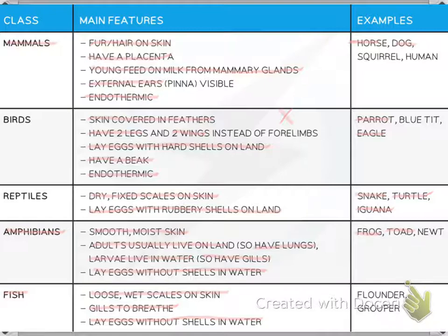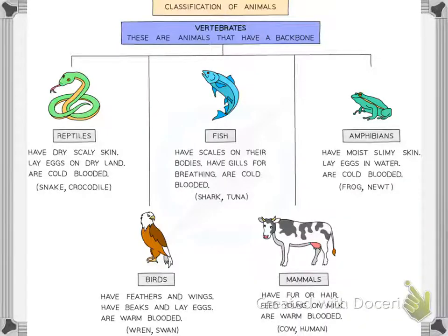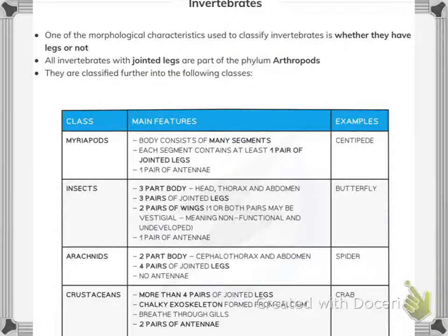This information is also shown in diagram format. Invertebrates with jointed legs are part of phylum Arthropoda, classified into the following classes: myriapods, insects, arachnids, and crustaceans.